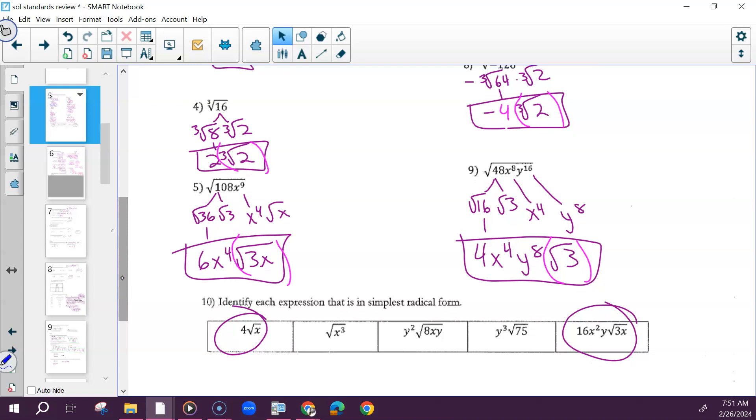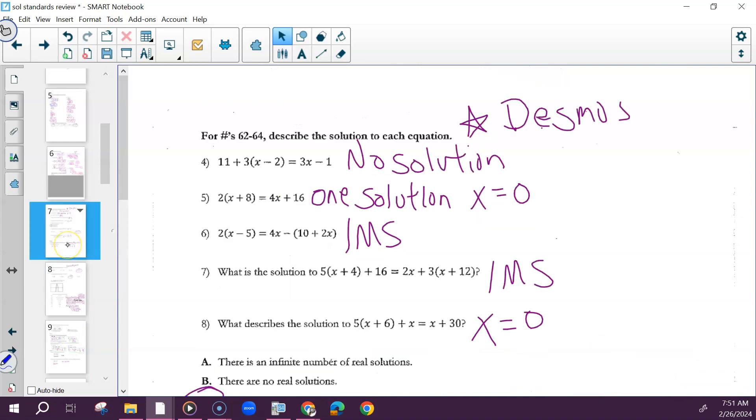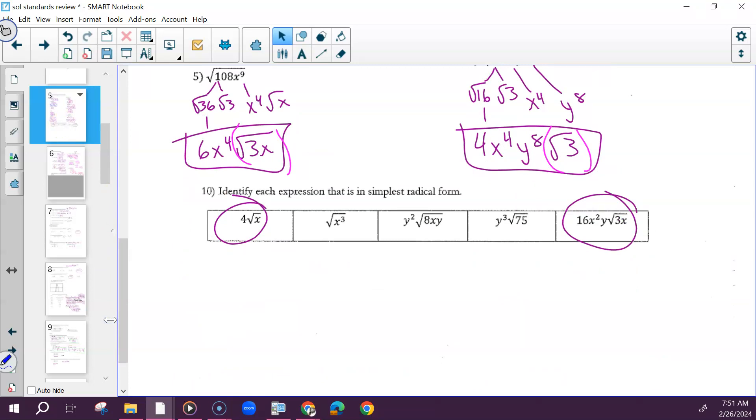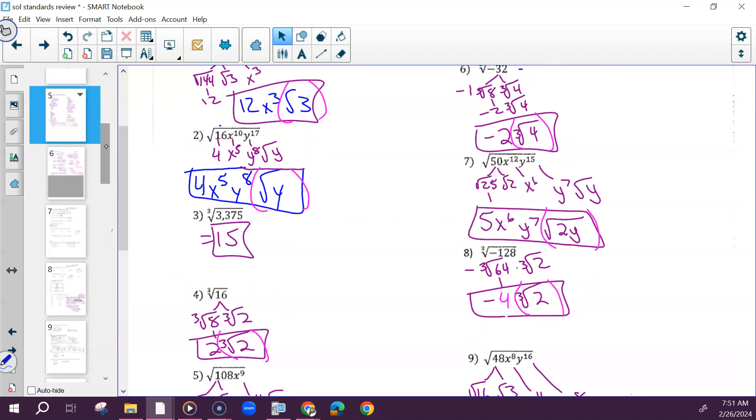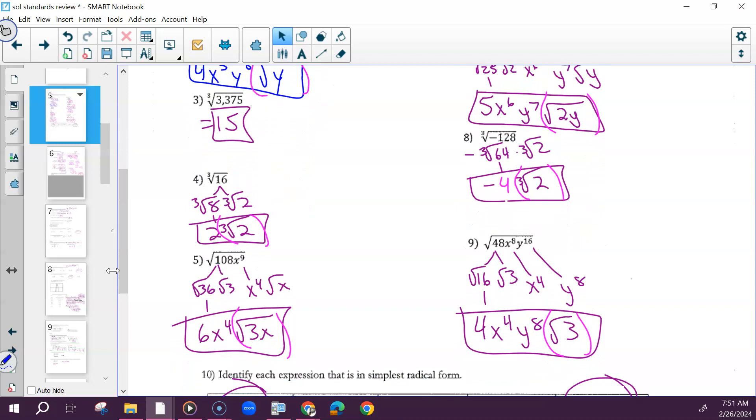5 was 6x to the 4th, times the square root of 3x. You could circle 10 while we're right here. 5 is 6x to the 4th, times, oh, I just said that one, sorry. 10, the first and the last, circle those two, and we'll go back up. 6, negative 2 times the cube root of 4. 7, 5x to the 6th, y to the 7th, times the square root of 2y. 8, negative 4 times the cube root of 2. And 9, 4x to the 4th, y to the 8th, times the square root of 3.